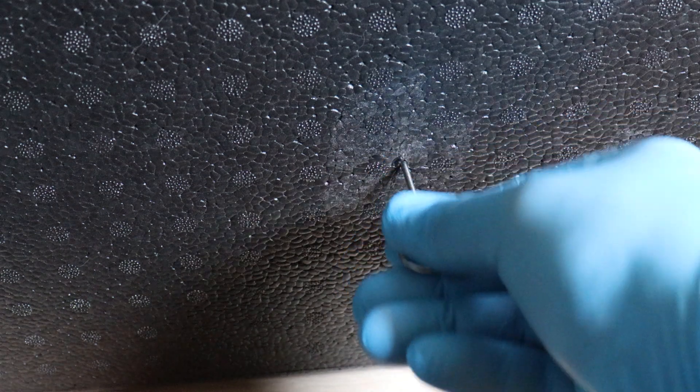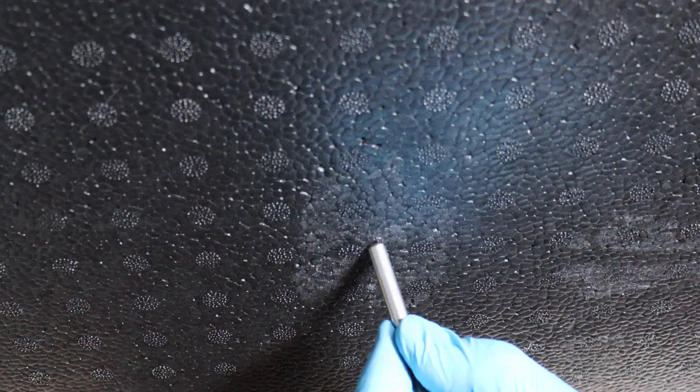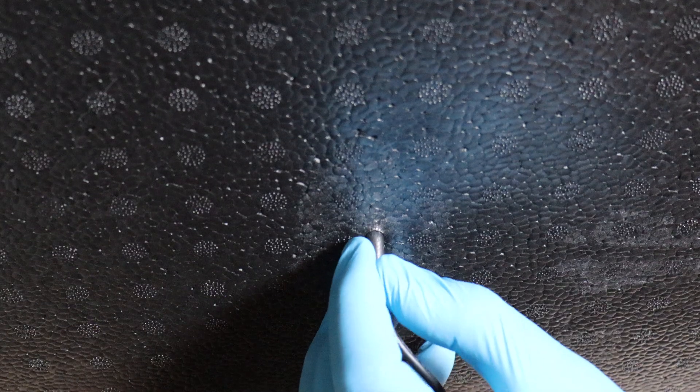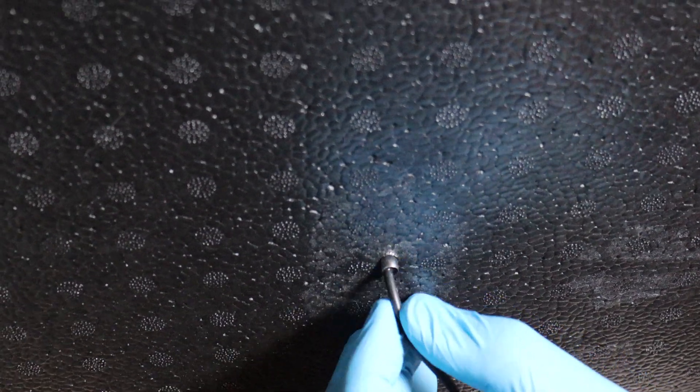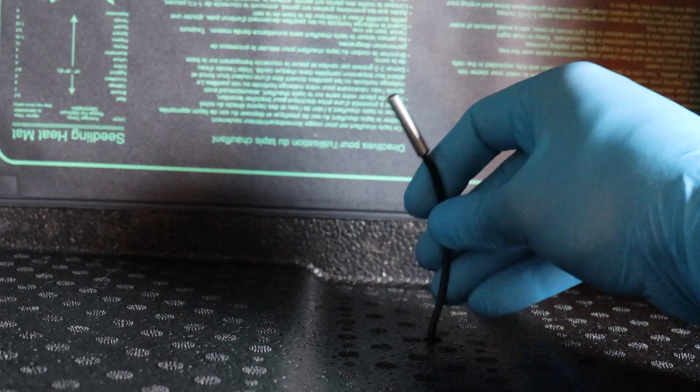Then take our skewer, make a hole in the side for our thermometer probe and in it goes. Easy as.